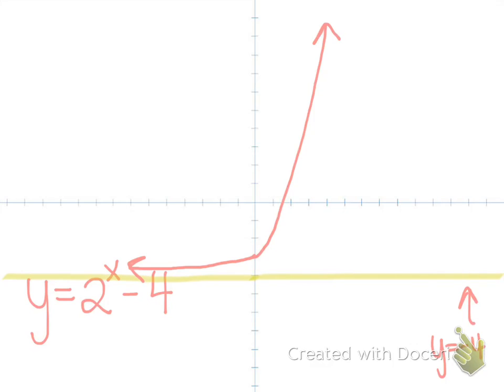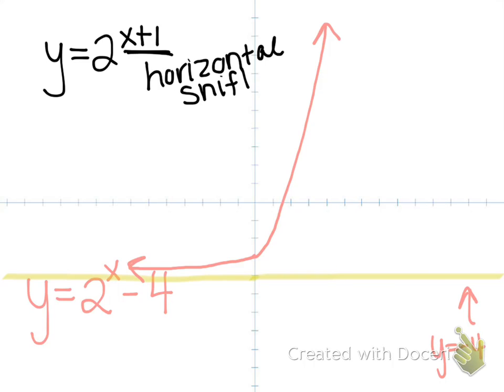The only other thing to mention is if you had a shift that looked like this, then this isn't going to affect the asymptote. This is a horizontal shift, and horizontals will move this left and right.